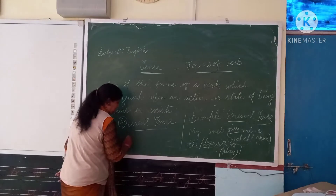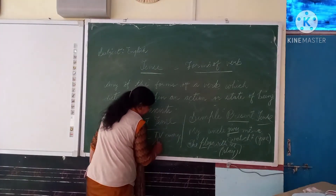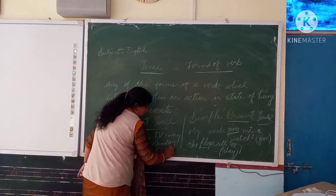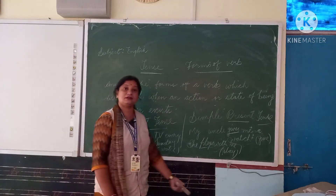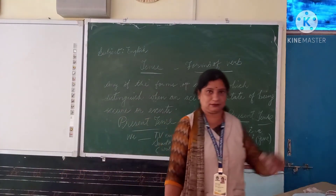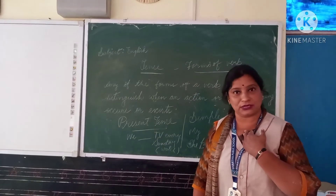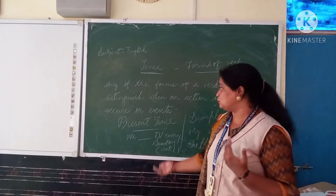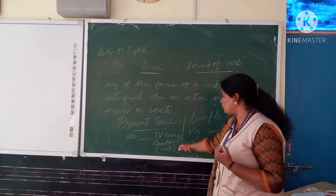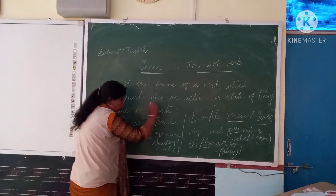One more example: We blank TV every Sunday — the verb given is 'watch.' Now see this 'we' — which person is this? It is first person, because I am also included in 'we.' I and we are first person only. So with first person, we use only the first form — just 'watch,' don't add 's' or 'es.' We watch TV every Sunday.